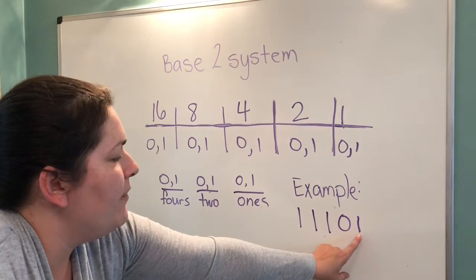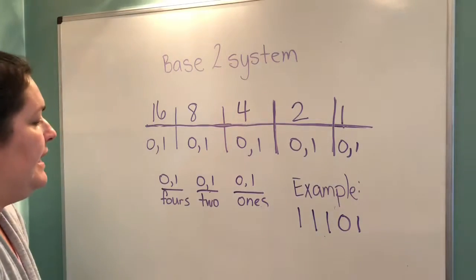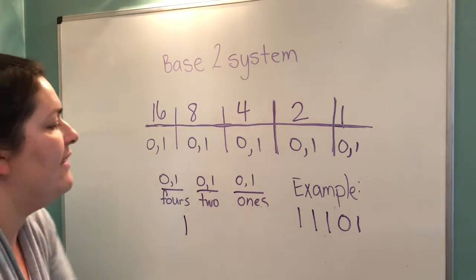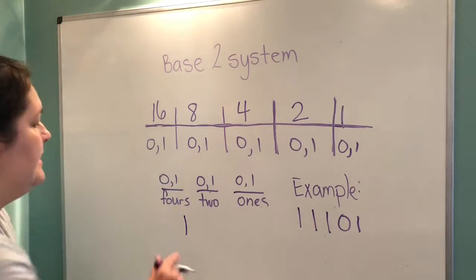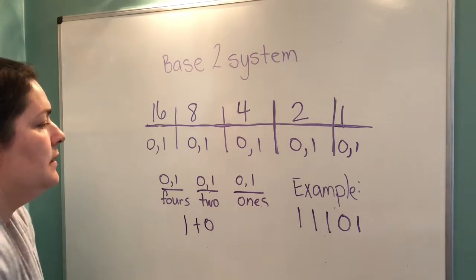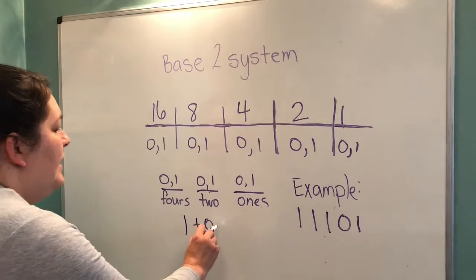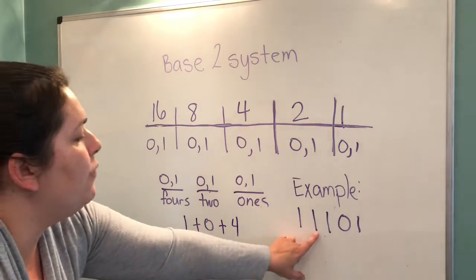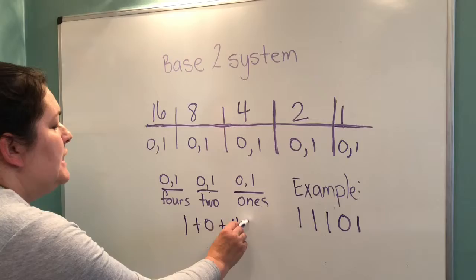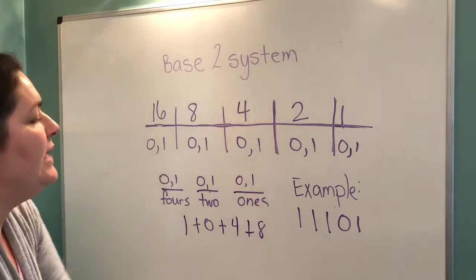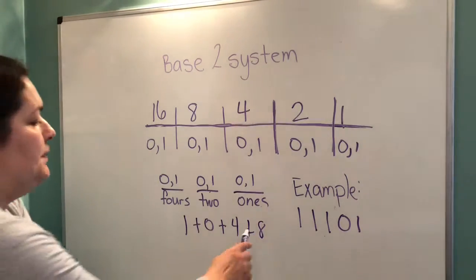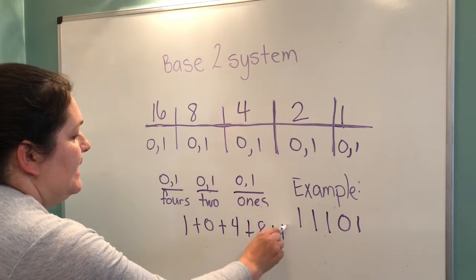Say, okay, we have 1 in the 1s place. We have 1 in the 2s place. We have 1 in the 4s place. So, we add 1, 4. We have 1 in the 8s place. So, we add 1, 8. And we have 1 in the 16s place. So, we add 16.